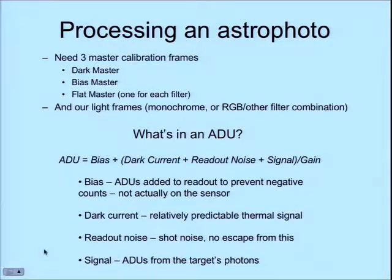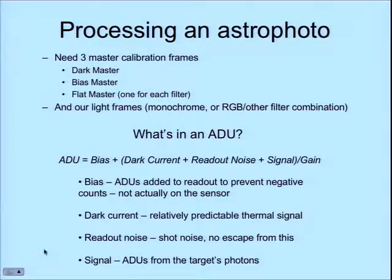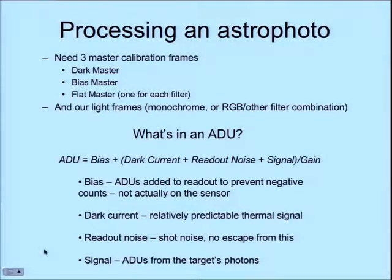There's also dark current — a relatively predictable thermal signal — and readout noise, which is noise you can't do much about from the act of reading out the sensor. Dark current is actually a predictable signal, not just noise. This graph shows temperature versus dark current. Silicon atoms jiggle around in the lattice — the hotter they are, the faster they jiggle, and when they bump into each other there's a chance they'll knock an electron loose that gets sucked into the pixel well. There's no way to distinguish that electron from one produced by a photon from the sky. So the quicker your silicon atoms are jiggling, the more erroneous signal you generate. You want to cool your sensors.